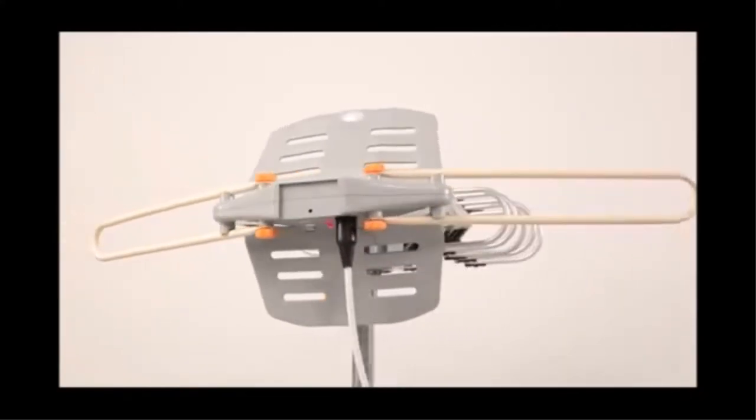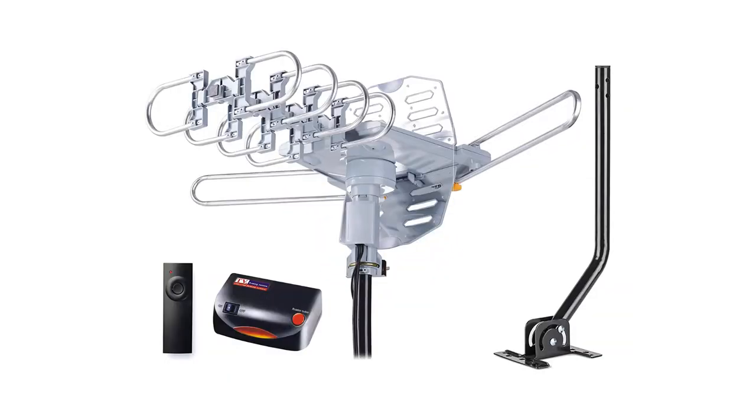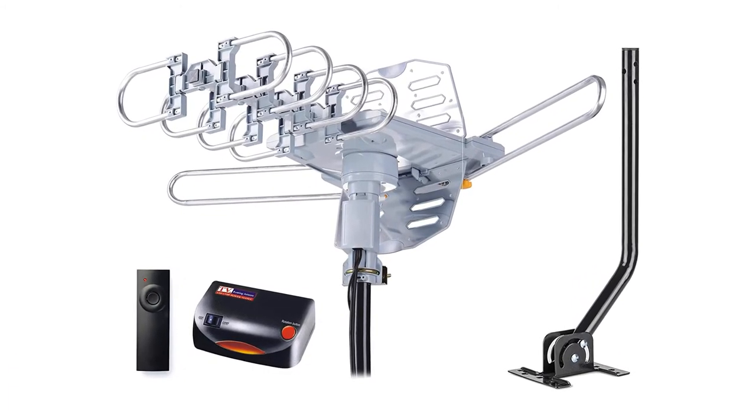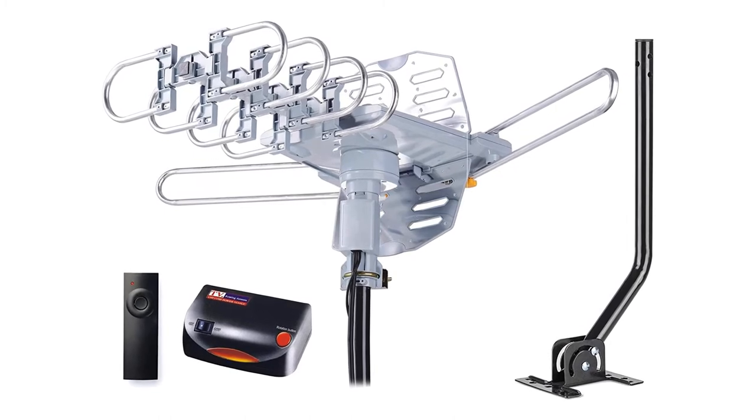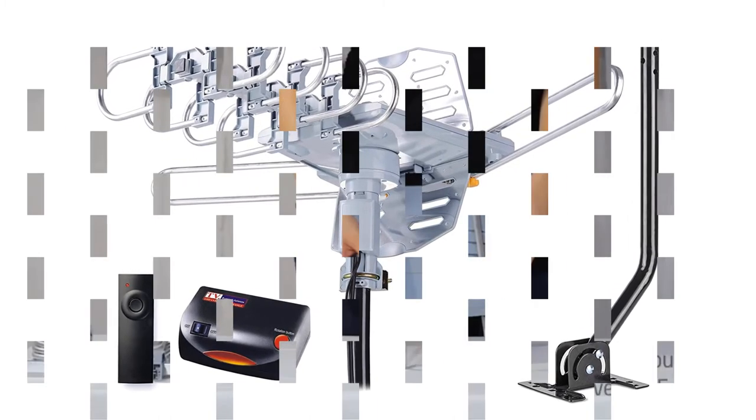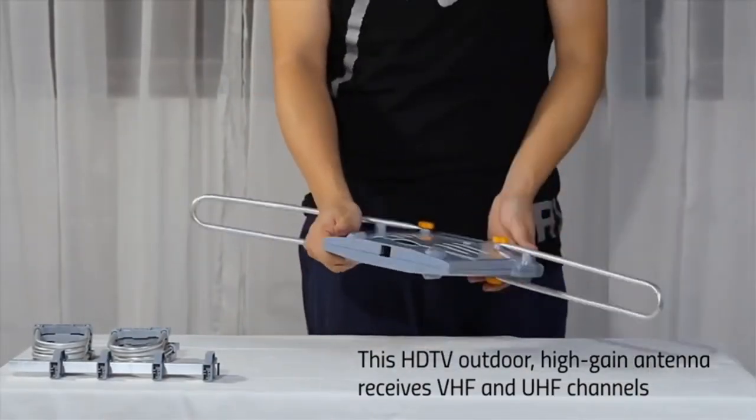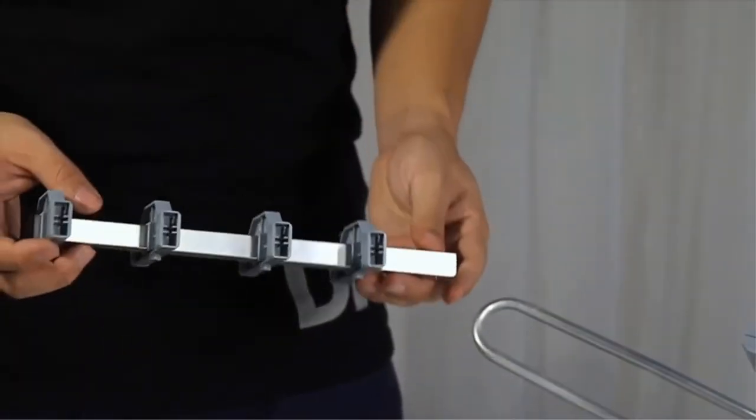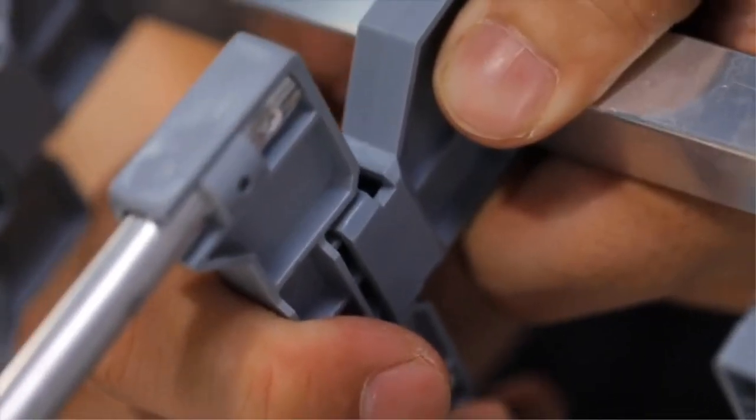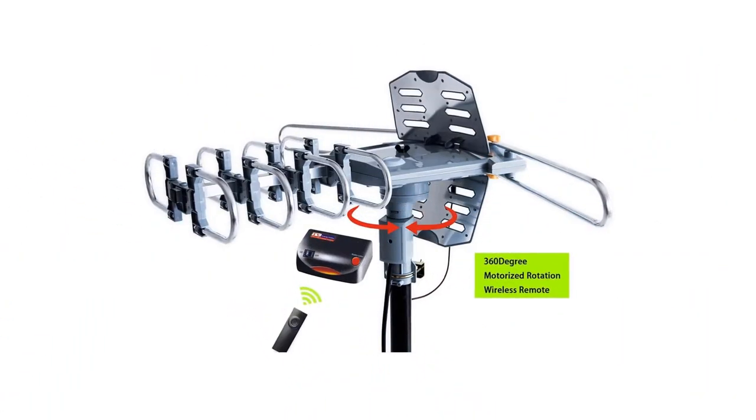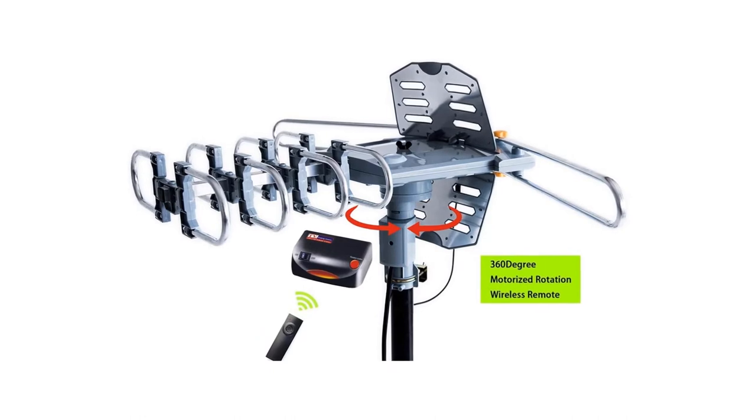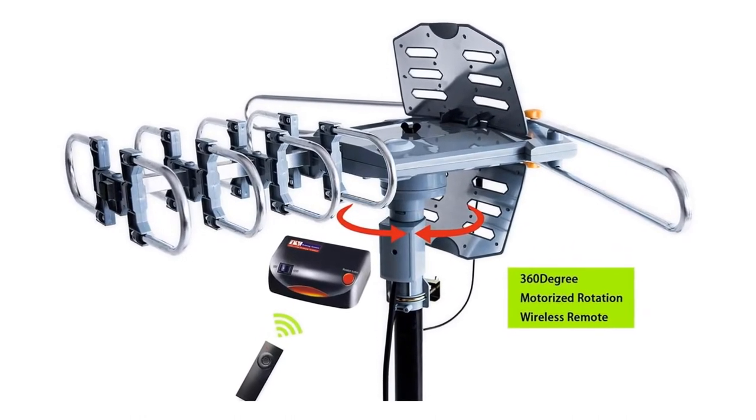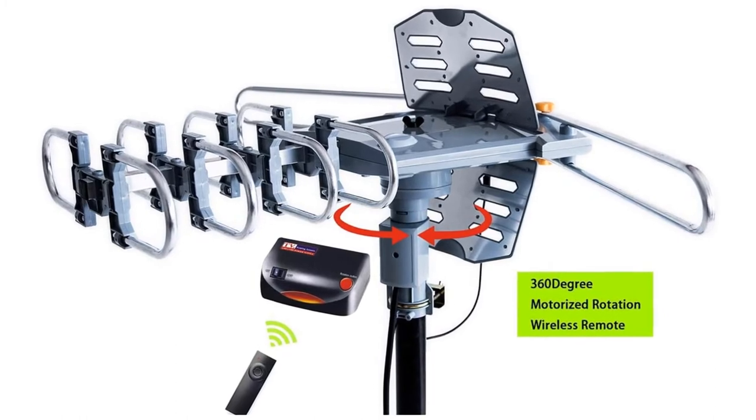Number five: Pingbingbing 150-mile digital amplified outdoor HD TV antenna. One of the best TV antenna choices to deliver HD and 4K viewing to two televisions without a separate splitter is the Pingbingbing digital amplified outdoor HD TV antenna. Not only does this antenna have dual television outputs with no splitter or adapter needed, but it also features a built-in amplifier to receive signals from a range of up to 150 miles.